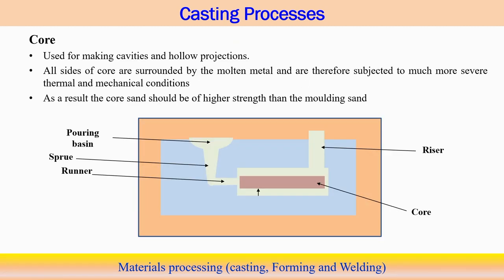Another important aspect of casting process design is the core. In sand mold casting, a core is placed inside the mold cavity to create hollow sections in the final component. The casting system includes a pouring basin, sprue, runner, mold cavity with the core, and a riser. The core is the solid part that ultimately creates the hollow section in the actual cast component.